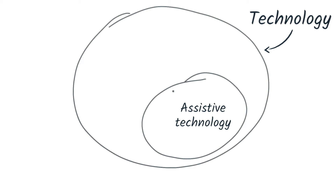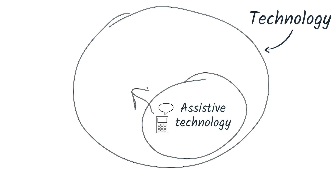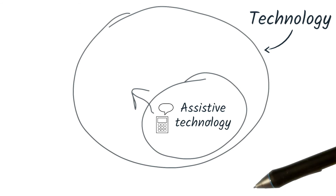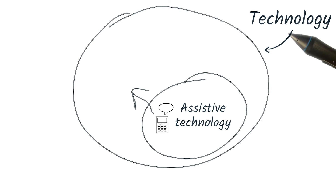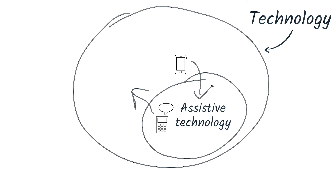For example, one of the earliest commercial speech synthesis products was a talking calculator for the blind. And now we see speech synthesis popping up all over the place, from driving directions to virtual assistants. On the other hand, technology which is general purpose often finds an assistive use — for example, people may use their smartphone's camera zoom to get a better look at something small in the real world.